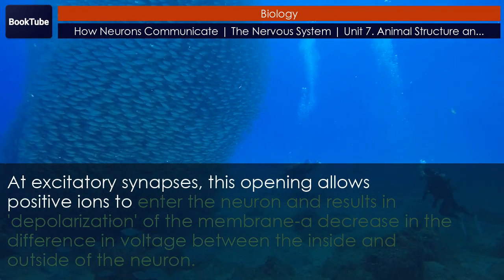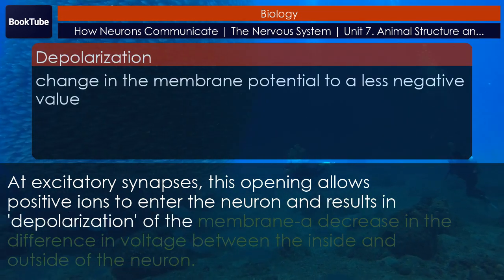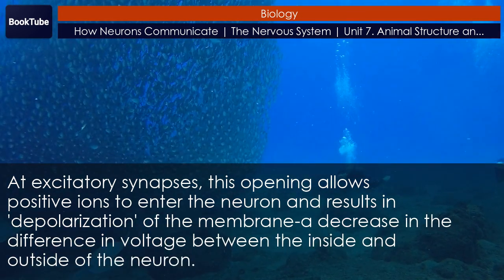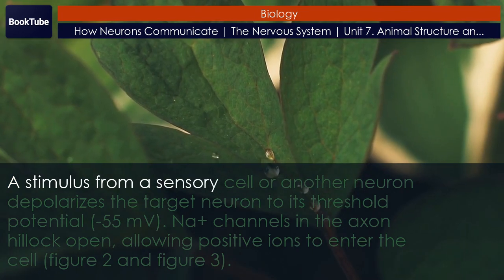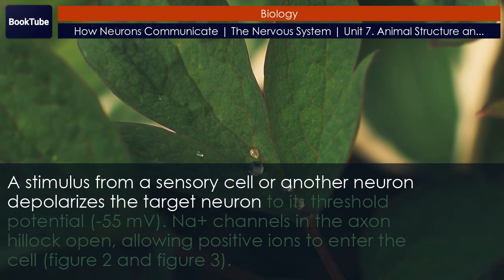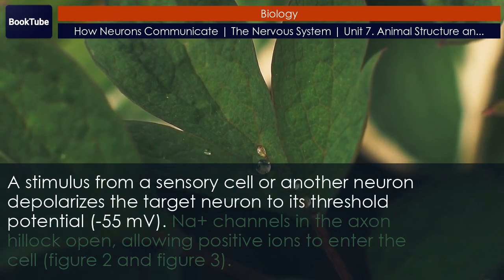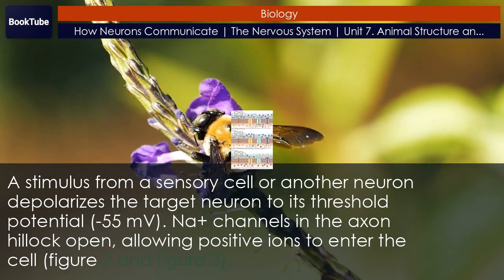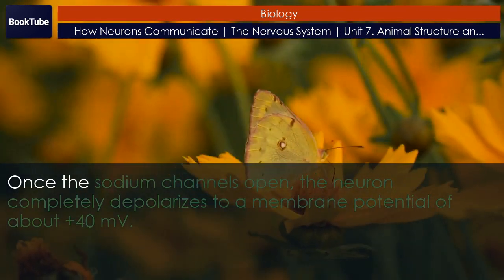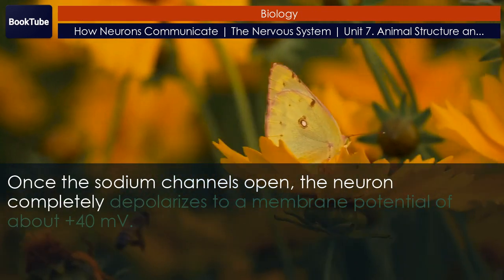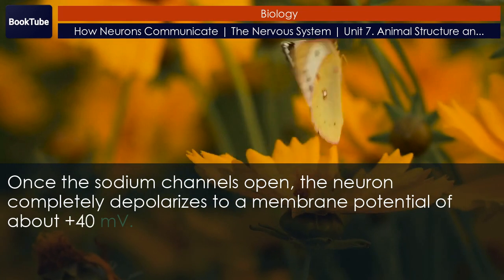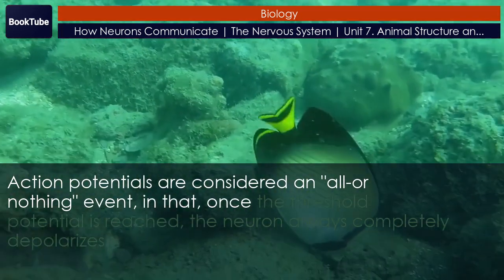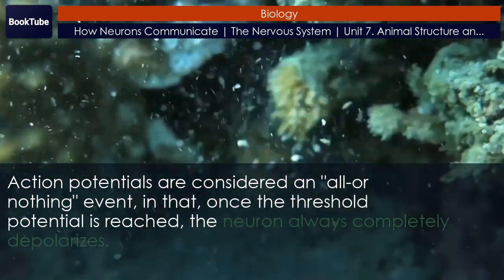At excitatory synapses, this opening allows positive ions to enter the neuron and results in depolarization of the membrane — a decrease in the difference in voltage between the inside and outside of the neuron. A stimulus from a sensory cell or another neuron depolarizes the target neuron to its threshold potential of minus 55 millivolts. Na+ channels in the axon hillock open, allowing positive ions to enter the cell. Once the sodium channels open, the neuron completely depolarizes to a membrane potential of about plus 40 millivolts. Action potentials are considered an all-or-nothing event, in that once the threshold potential is reached, the neuron always completely depolarizes.